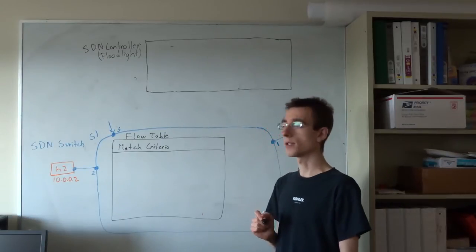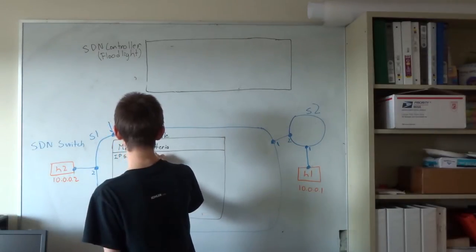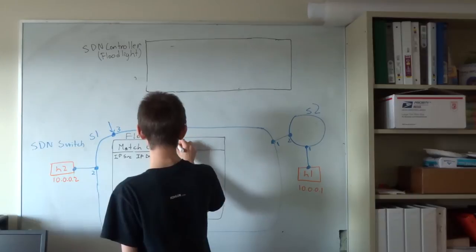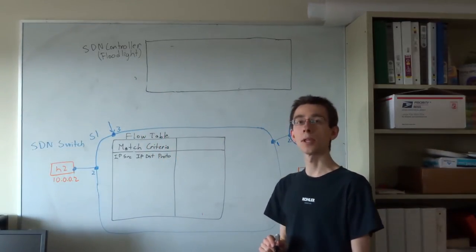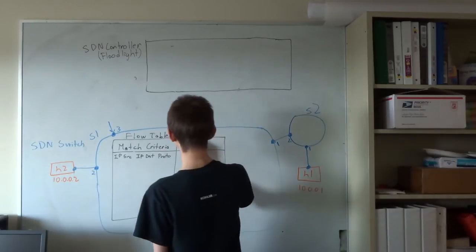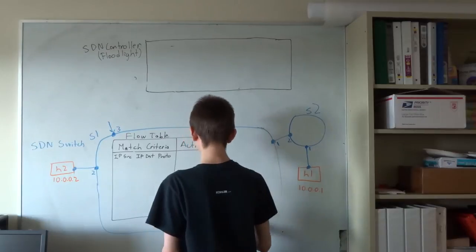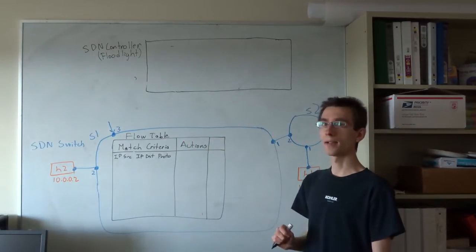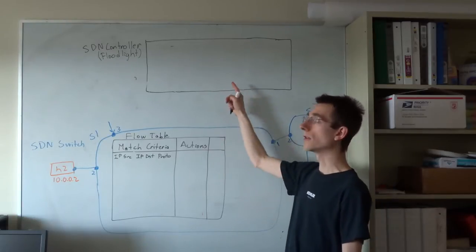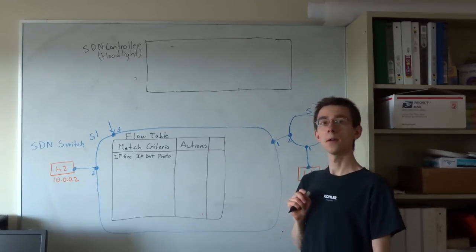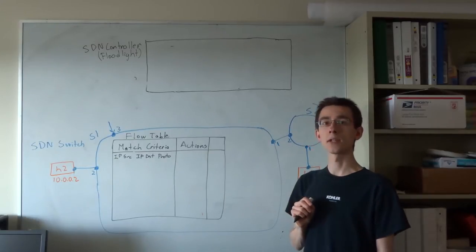We can define match criteria over the IP source, IP destination, and protocol fields. We'll also define a series of actions that should be applied to packets matching a particular entry in the flow table. The actions can include dropping a packet, sending a packet out a particular port, sending the packet to the SDN controller, modifying fields in the packet header, or performing other actions.